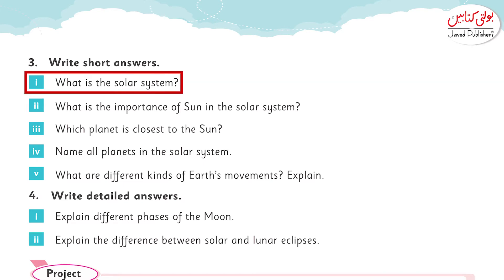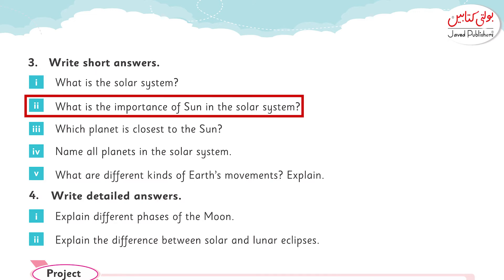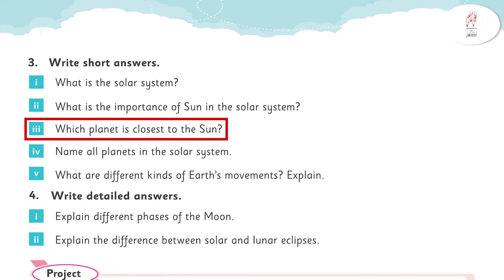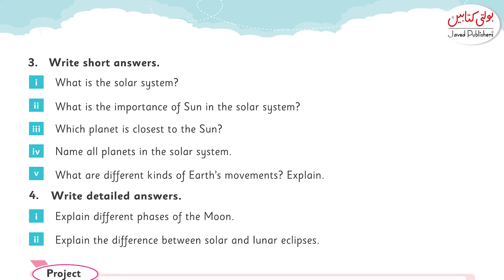Now write short answers. What is the solar system? You can easily find the answer on page number 87, first line. What is the importance of the sun in the solar system? You can find the answer on page number 80, first paragraph, ending line. Which planet is closest to the sun? Yes, from the diagram you can see — Mercury is closest to the sun. Name all the planets in the solar system — you can find all the names from the diagram on page number 80.